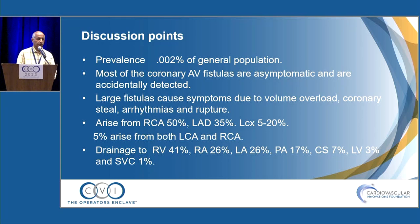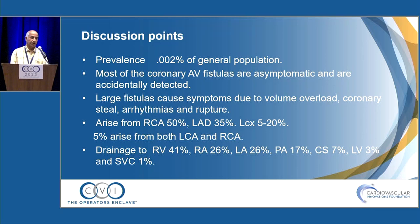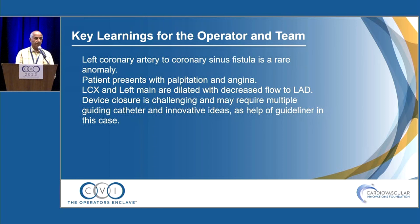In discussion: prevalence of these fistulas is 0.002% of the general population. Most are asymptomatic and accidentally detected. Large fistulas cause symptoms due to volume overload, coronary steal, arrhythmias, and sometimes rupture. Most arise from the right coronary artery; about one-third from the LAD; circumflex 5-20%; and 5% bilaterally. They drain in about 40% of cases into the right ventricle, 25% into the right atrium, and opening into the coronary sinus is very rare. Key learning: left circumflex to coronary sinus fistula is rare. Device closure is challenging and may require multiple guiding catheters and innovative ideas, such as using a Guideliner to push the catheter.